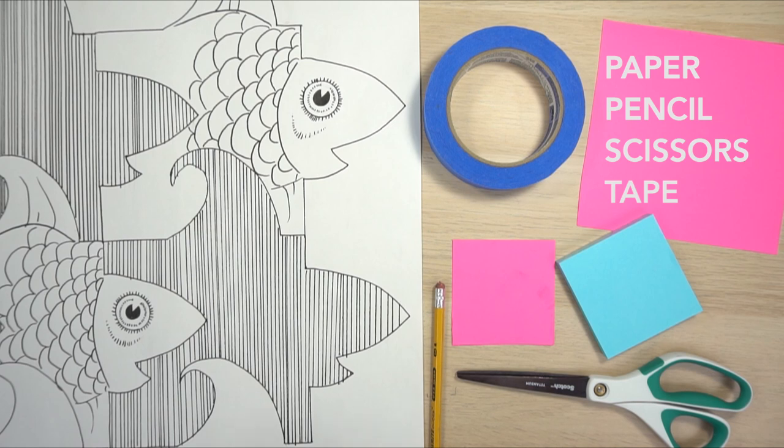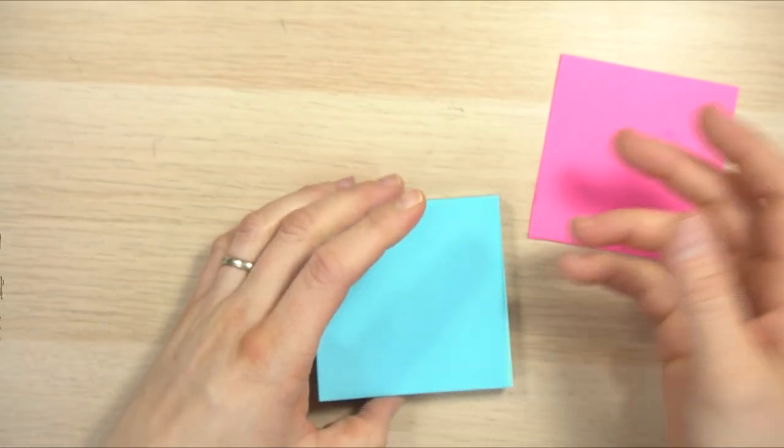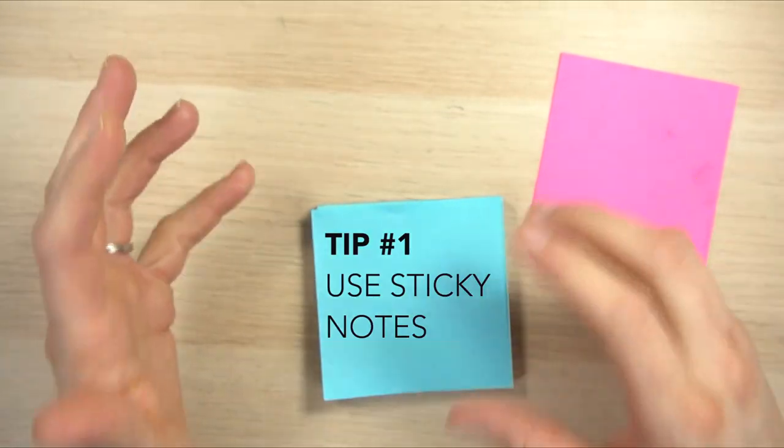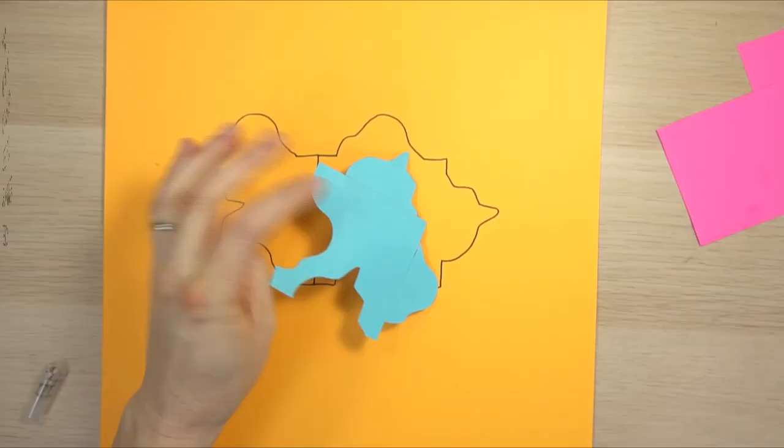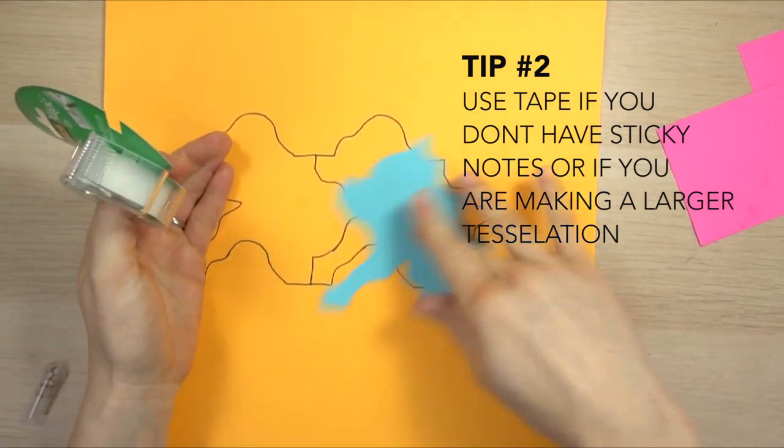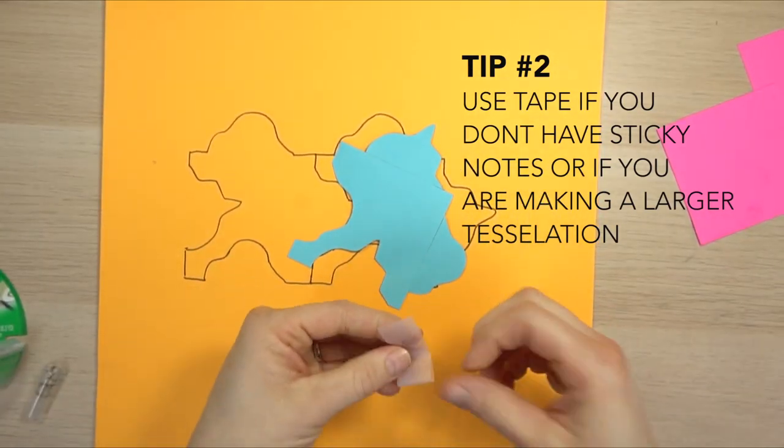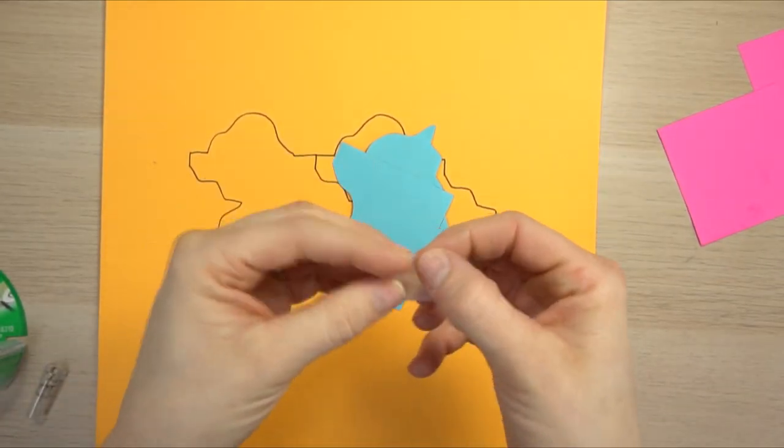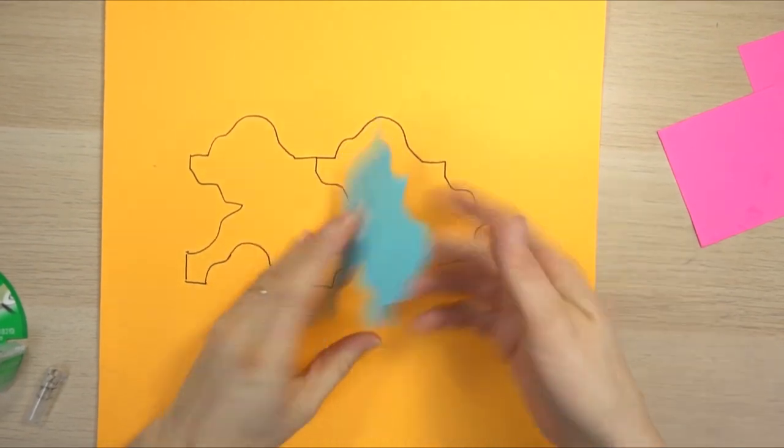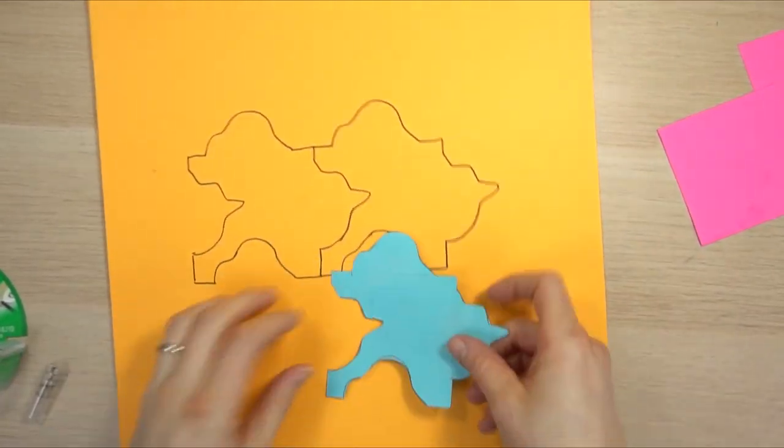Tip number one: use sticky notes to make each shape of your tessellation. Another tip to keep it from moving around, just take some tape, roll it up like so, stick it on the back, and then as you're tracing it that tape is going to keep it where you want it to be. This definitely makes it a lot easier.